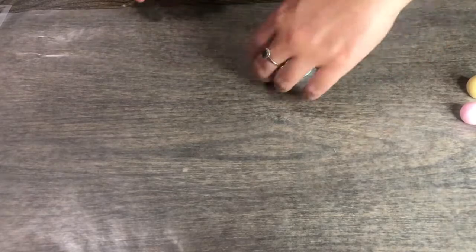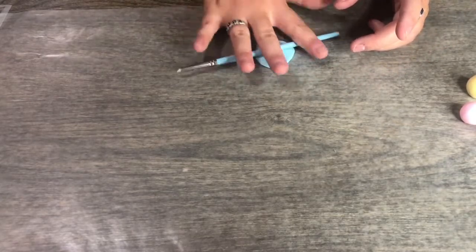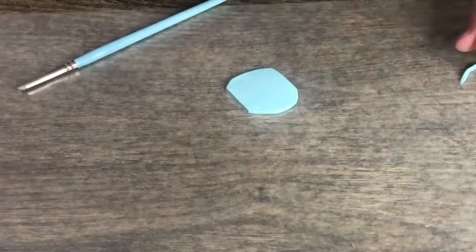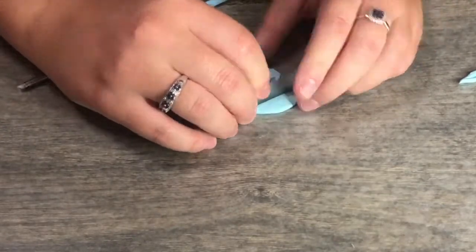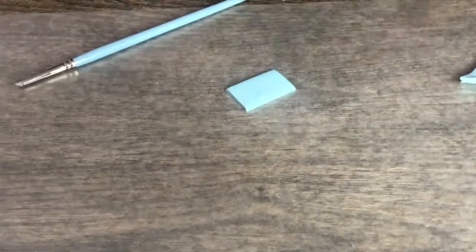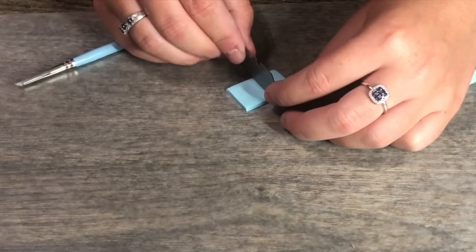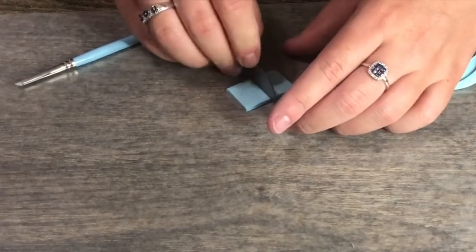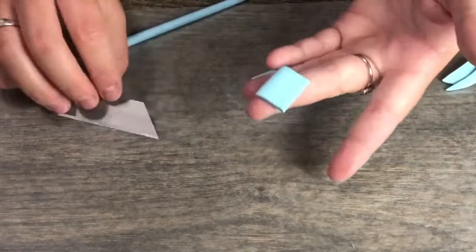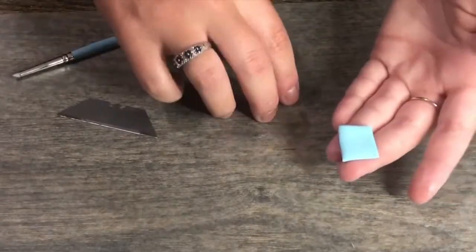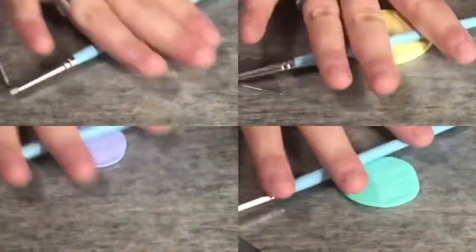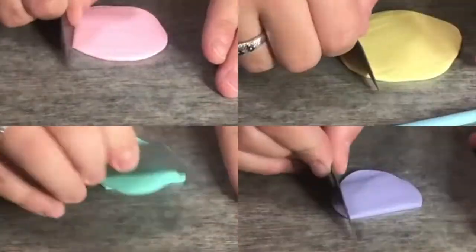So once it gets about to the thickness that I would like for it to be, I'm going to take a razor or a knife and I'm just going to cut it into a rectangle. So now I'm going to cut this into two squares since I'm making two earrings and these squares don't have to be perfect. There you go. So now I have two little squares for my earrings so I'm going to set this aside and I'm going to repeat this with every color.